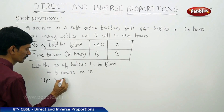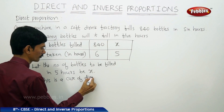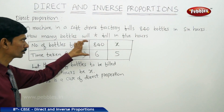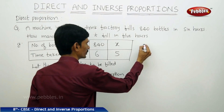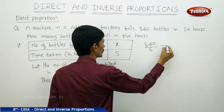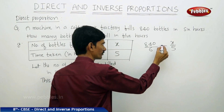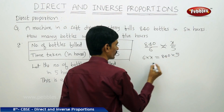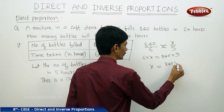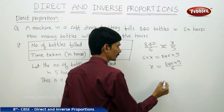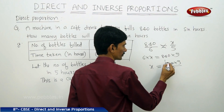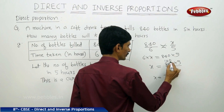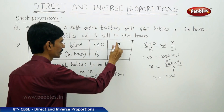This is a case of direct proportion. In direct proportion, the ratio between two quantities remains a constant. So we can write 840 divided by 6 equals x divided by 5. By cross multiplication: 6 into x equals 840 into 5. So x equals 840 into 5 divided by 6. Canceling with the 6 table: x equals 140 into 5, which equals 700.